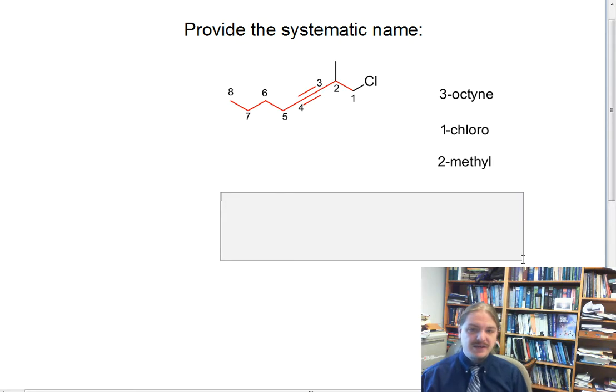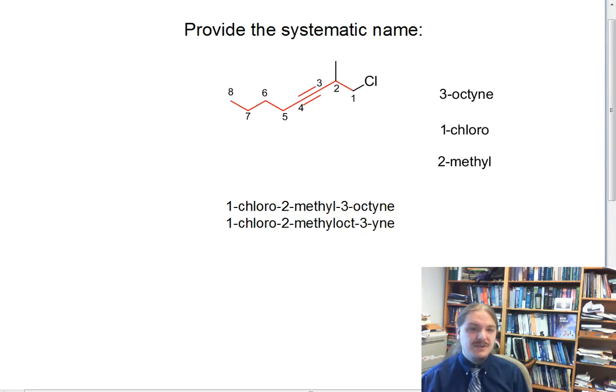Now all that's left to do is put that together. We list substituents in alphabetical order, not by size or numerical order. Because chloro is alphabetically before methyl, we list that first. Then we put three-octyne at the end. So this is 1-chloro-2-methyl-3-octyne. It's perfectly legitimate to stick the three in between the oct and the yne to be really explicit about where the alkyne is.